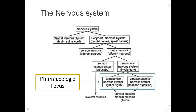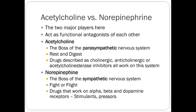By manipulating these systems, we can induce a number of pharmacologic actions that can affect disease states positively. Breaking it down further, we have two major players: acetylcholine and norepinephrine, and they act as functional antagonists of each other. Acetylcholine is essentially the neurotransmitter in charge of the parasympathetic nervous system, while norepinephrine is in charge of the sympathetic nervous system. While they don't act on the same receptors, they have a functional antagonism of each other's effects — they're really doing the opposite types of things.